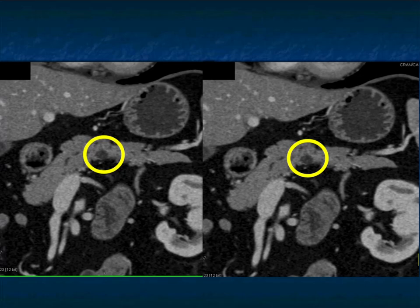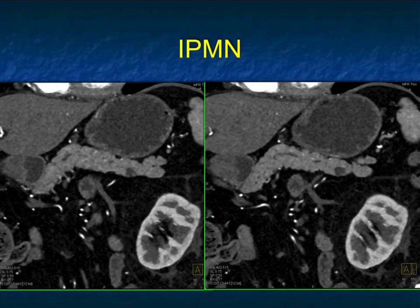Now with this lesion, there's no enhancing wall, no wall thickening, no nodularity. Depending on the patient's age and history, you might follow this, but in your heart you know this is a low-priority lesion.